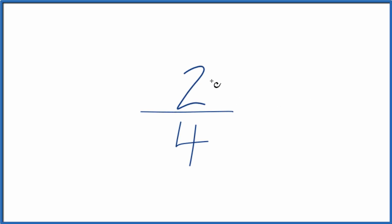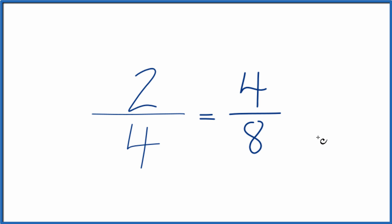If you need to find equivalent ratios for two-fourths, here's how you do it. What we're going to do is multiply both the numerator and denominator by the same number. So we can multiply 2 times 2, that would give us 4. 4 times 2 would give us 8, and that's an equivalent ratio.